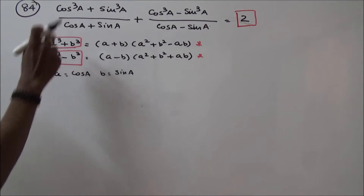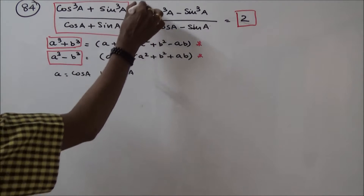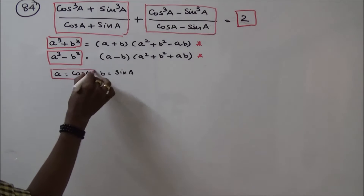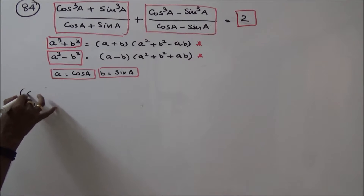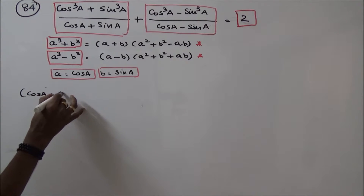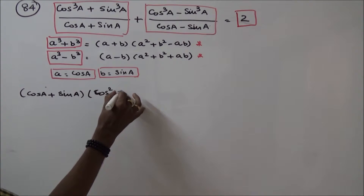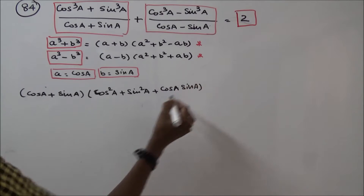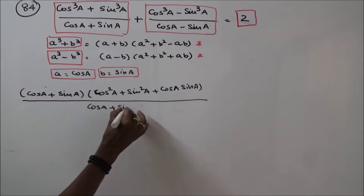We take the first part. Using a³ plus b³, with a equal to cosA and b equal to sinA, the numerator becomes (cosA plus sinA)(cos²A plus sin²A minus cosA·sinA), divided by (cosA plus sinA).